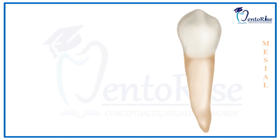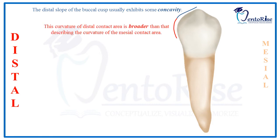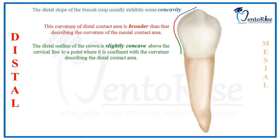Likewise, the distal outline of the crown starting from the cusp tip shows some concavity on the distal slope of the buccal cusp. The distal contact area is broad and broader than the mesial contact area. Moving down more cervically, the distal outline is slightly concave above the cervical line, very similar to the mesial outline.